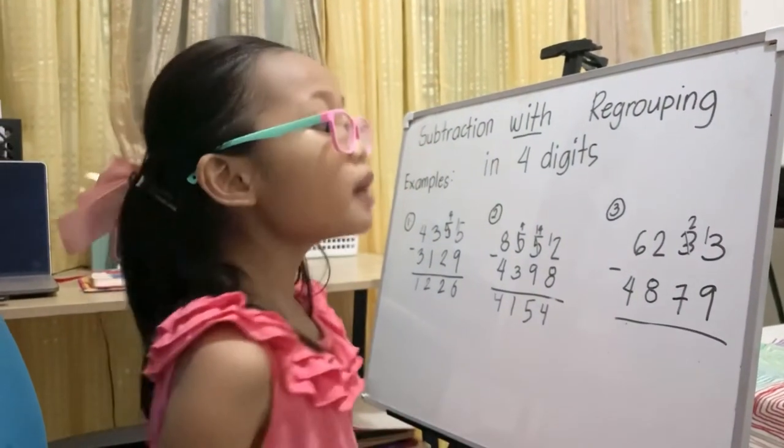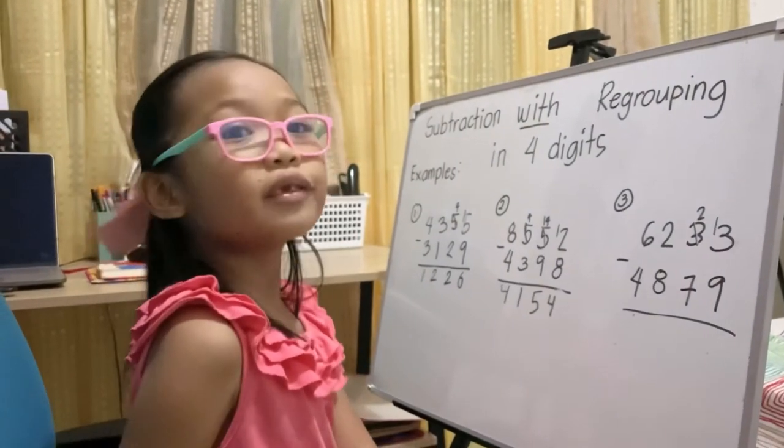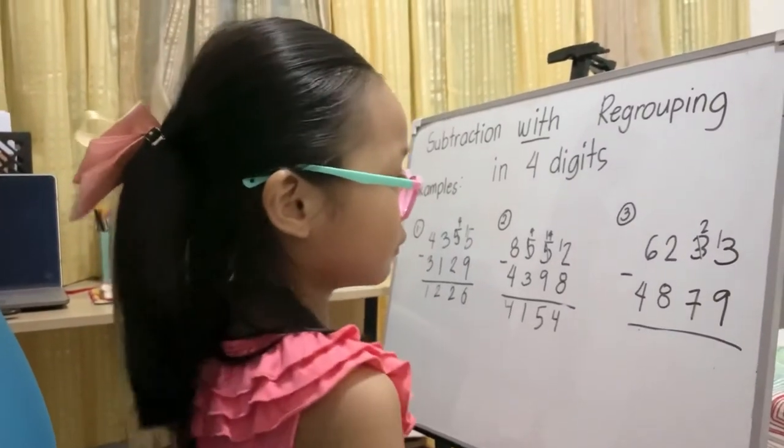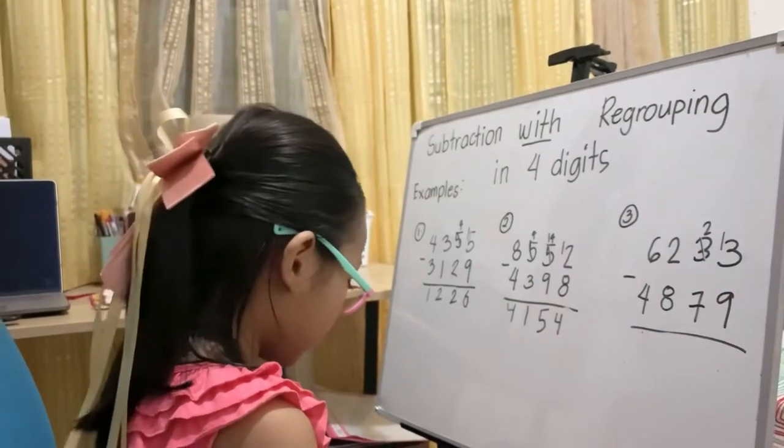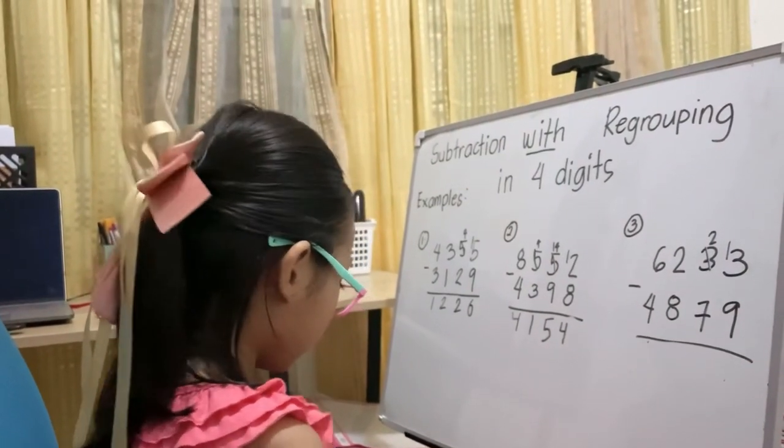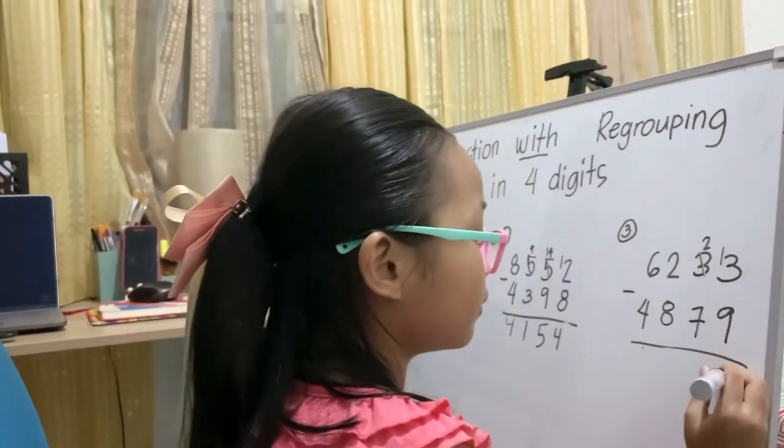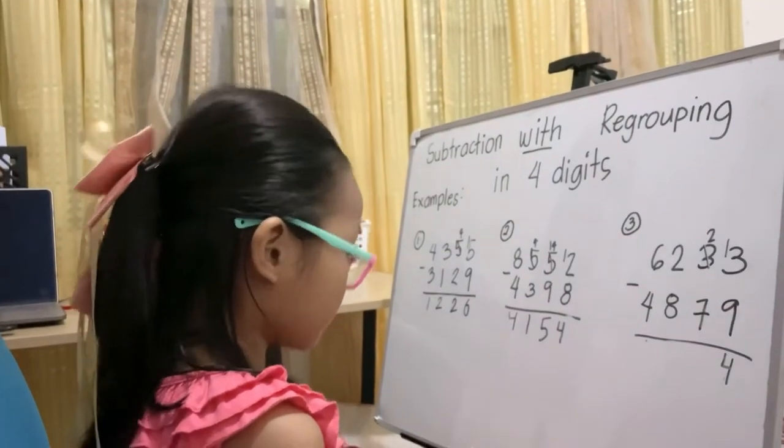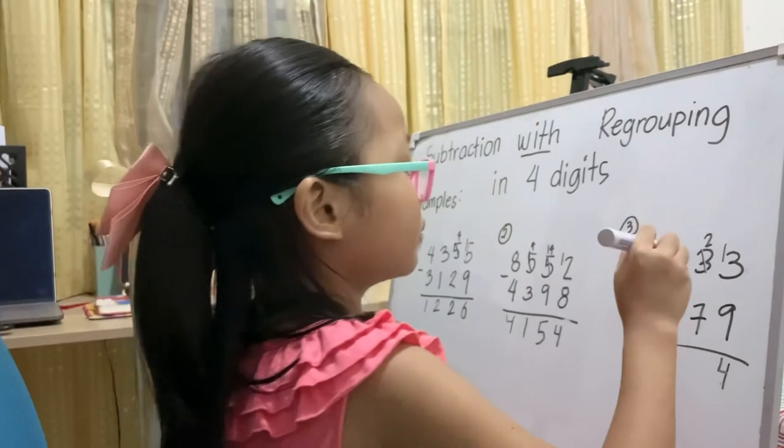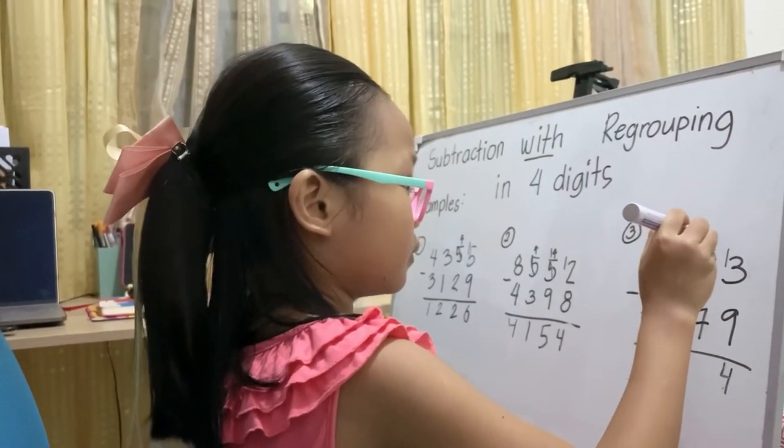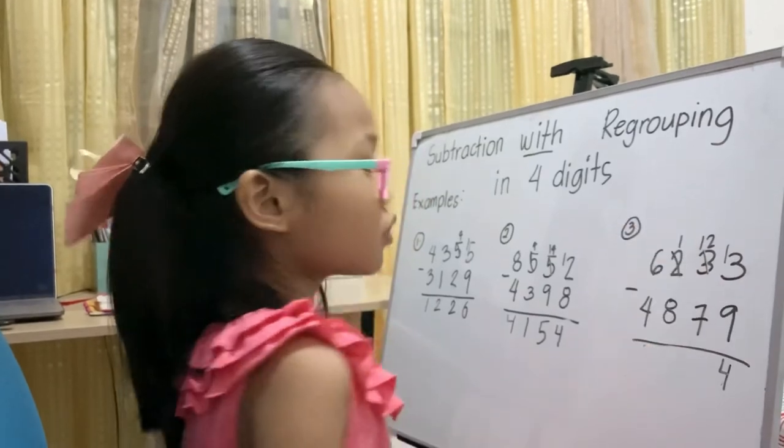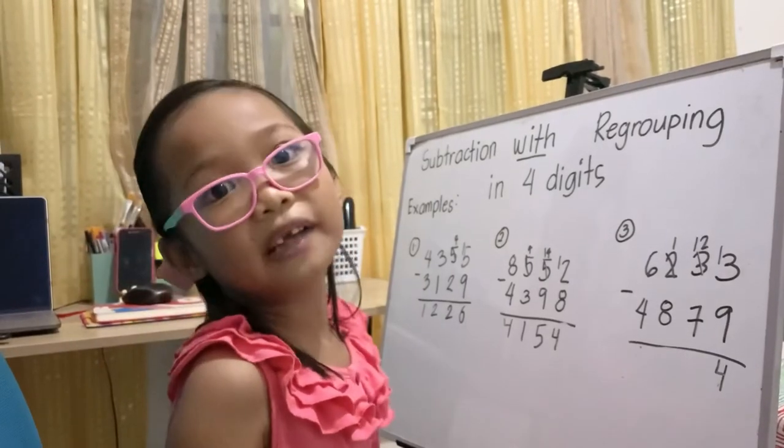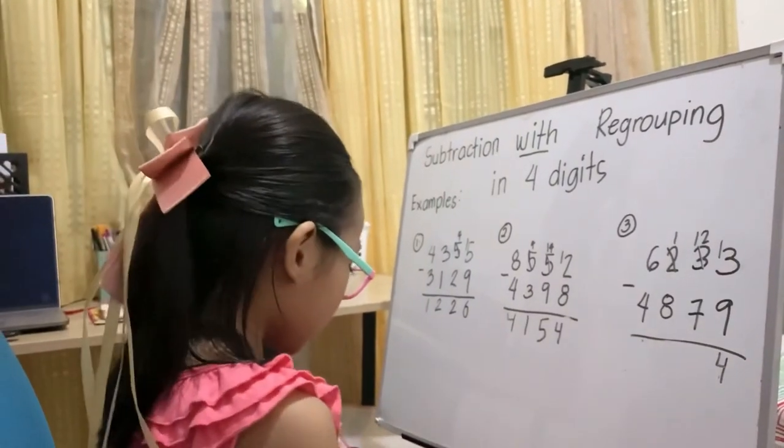Three becomes 13, and three becomes two. And three becomes two in the tens place.